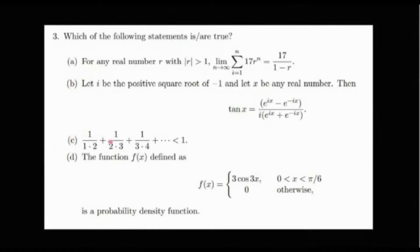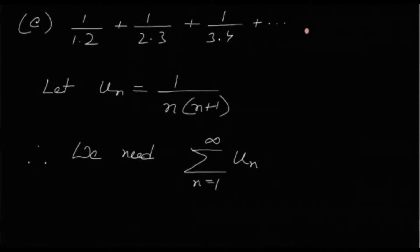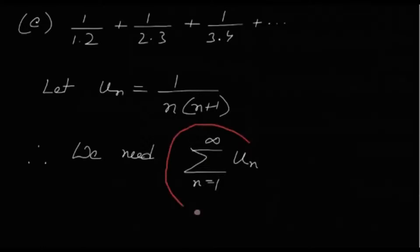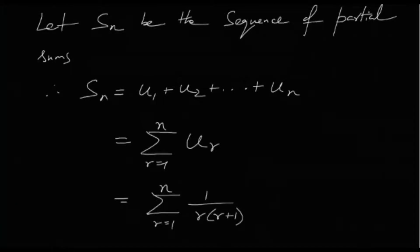Option C: the series 1/(1·2) + 1/(2·3) + 1/(3·4) + ... — we need to check if its sum is less than 1. Let u_n = 1/[n(n+1)] and S_n be the sequence of partial sums. S_n = Σ(r=1 to n) 1/[r(r+1)].